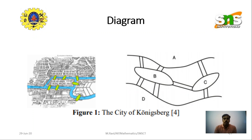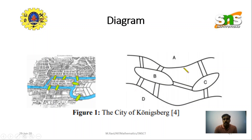This is the city of Königsberg. Bank A is on one side and D on the other, representing the two banks of the river. The city is connected by seven bridges, shown in green color: 1, 2, 3, 4, 5, 6, 7. B and C are the two islands.